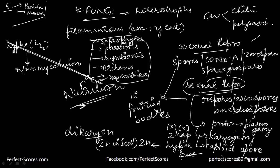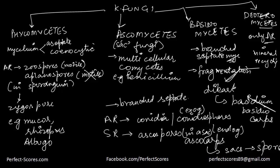In sexual reproduction, the first phase is plasmogamy where protoplasm fuses. Then there is karyogamy. In some fungi there is a dikaryotic stage where two nuclei reside in one cell — that is the dikaryon. Otherwise normally it is karyogamy, and finally a haploid spore is formed. Phycomycetes has aseptate and coenocytic mycelium; asexual reproduction is by zoospores (motile) or aplanospores (static), spores develop in the sporangium forming a zygospore. Examples: Mucor, Rhizopus, and Albugo.